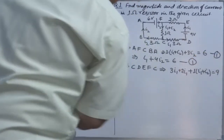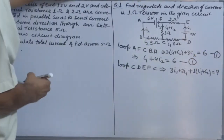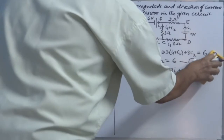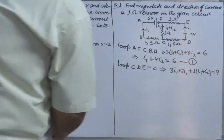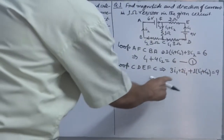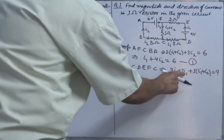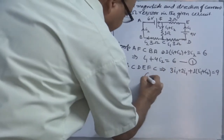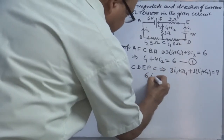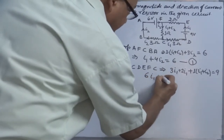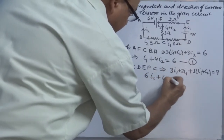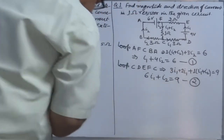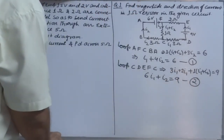After solving the second loop equation — combining 3I1, 2I1, giving 5I1, plus 6I1 — we arrive at the second algebraic equation: 6I1 + I2 = 9.